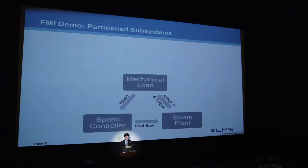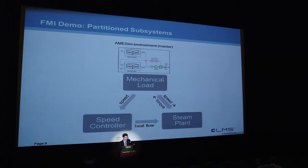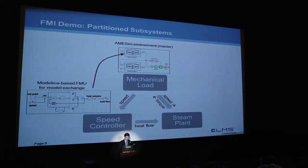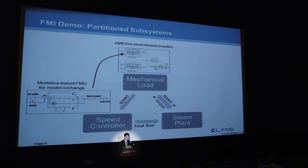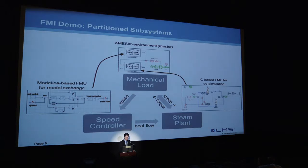The mechanical load system has to send the speed signal to the speed controller, the speed controller sends the heat flow to the steam plant, and the steam plant and mechanical load communicate back and forth with their speed and torque. For this demo, Aimsim will be the master environment for the mechanical load portion. We'll build a Modelica model for the speed controller, which will have an FMU for Model Exchange exported into the Aimsim environment. Then we'll use a C-based FMU to do the other side - an Aimsim model using our C libraries exported as an FMU for CoSIM, giving us all four FMI capabilities working together.